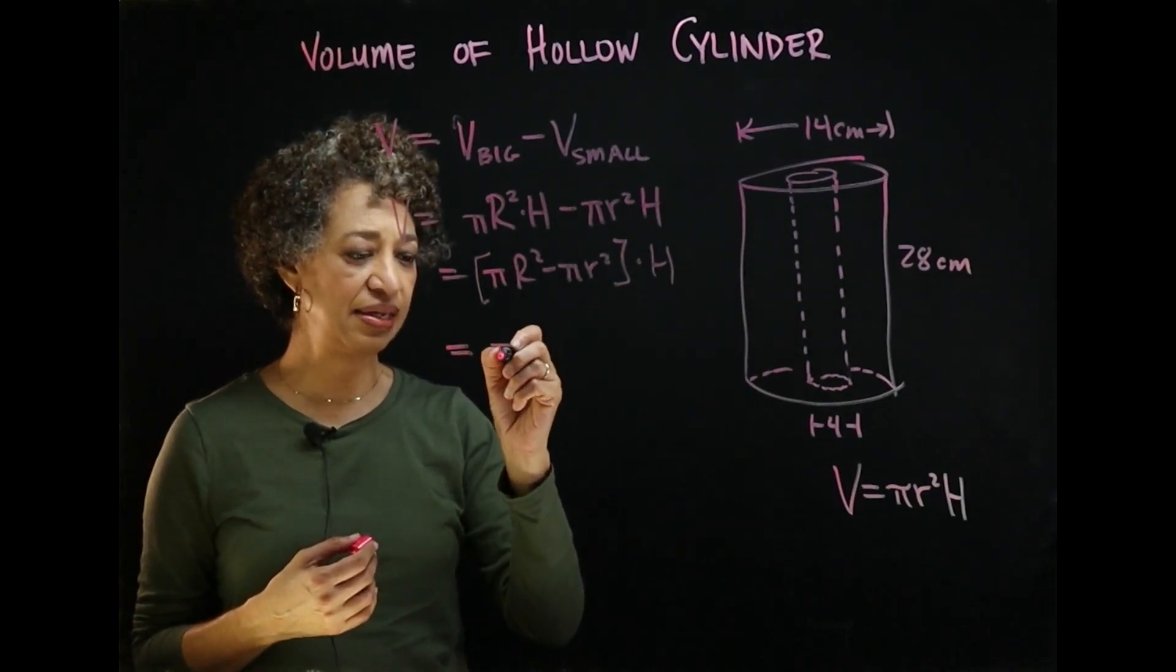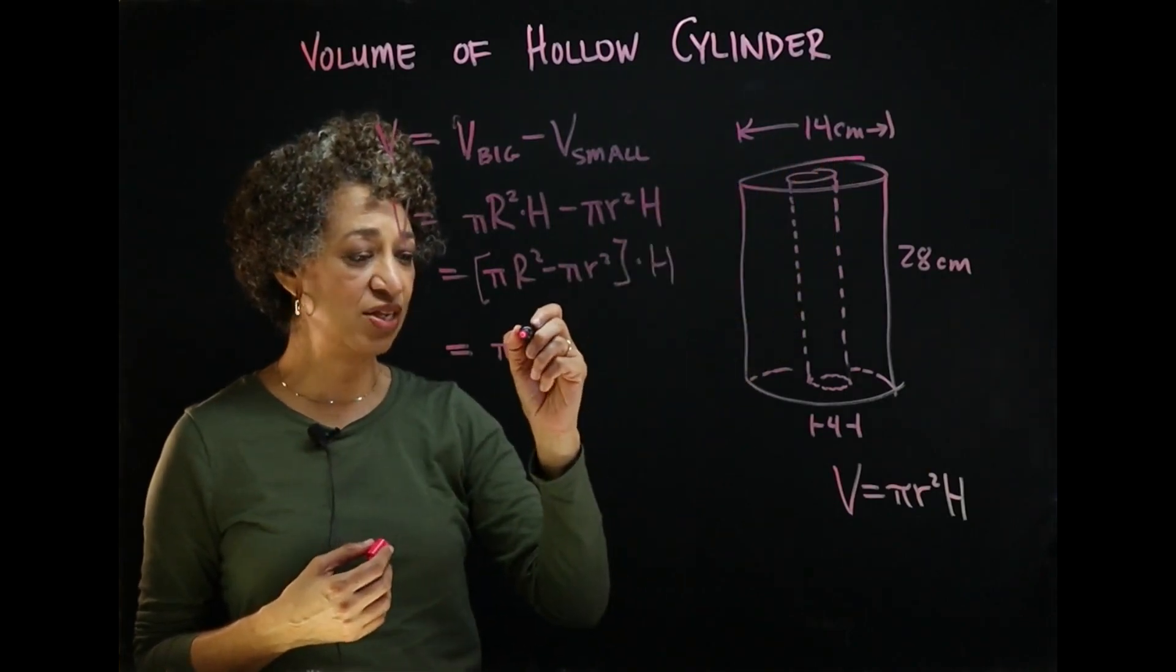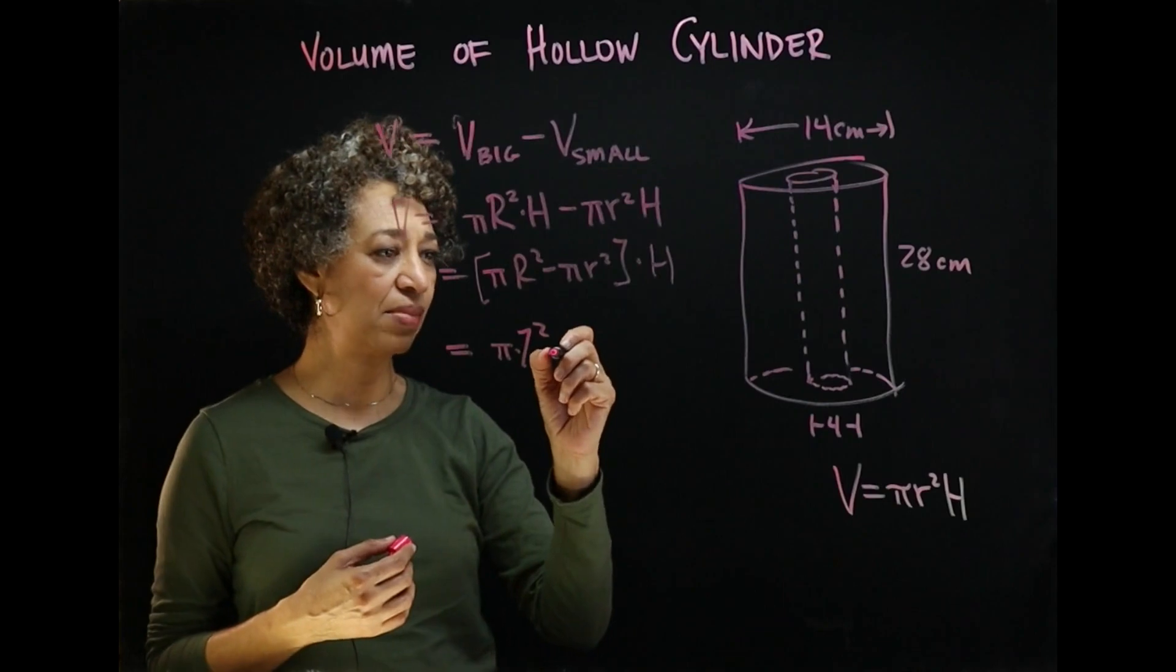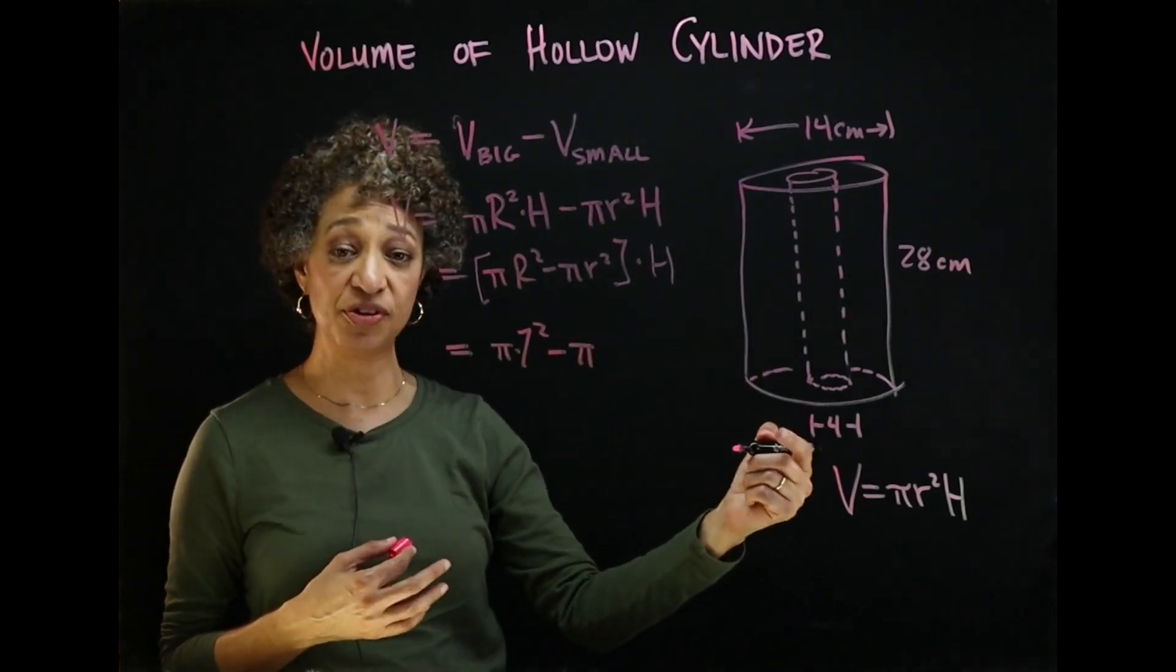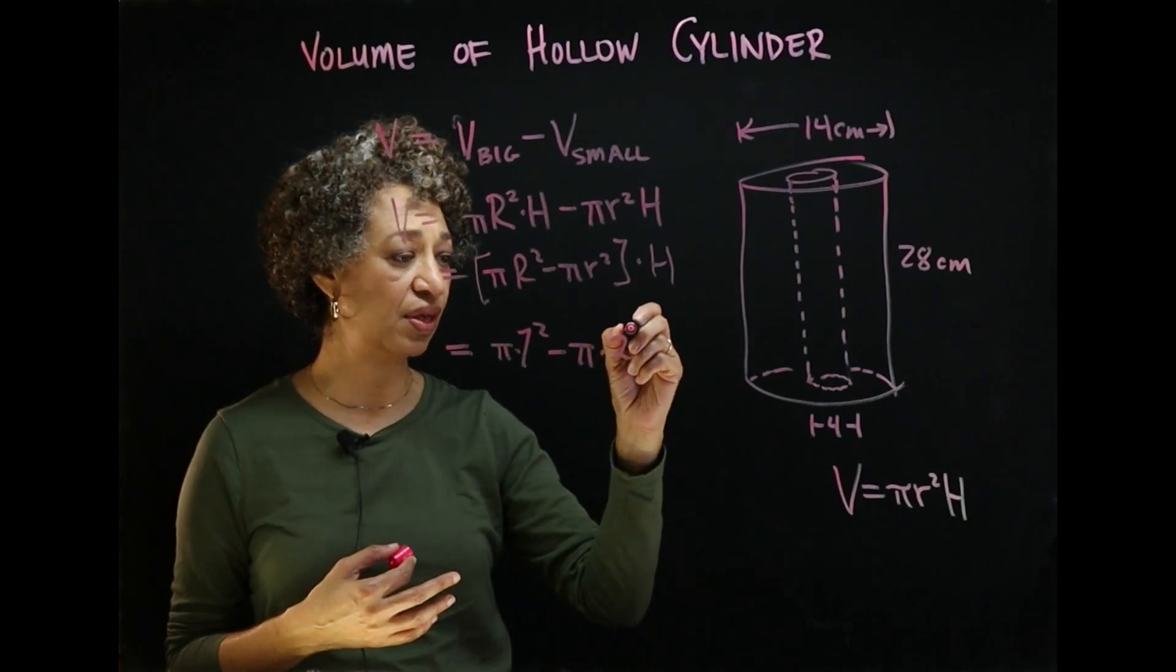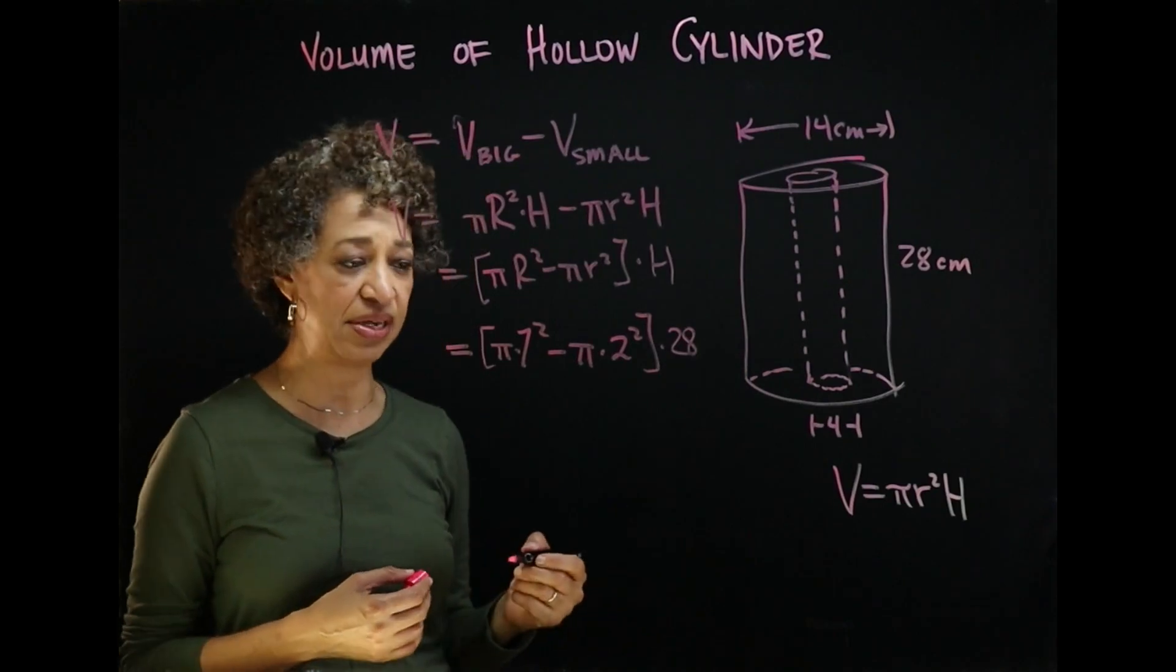So I have pi times the big radius. Now the 14 is a diameter. So the radius would be half of that. So pi times seven squared minus pi times half of four would be the radius of the smaller cylinder and that is two. And we're going to multiply all of that times the height, which is 28 centimeters.